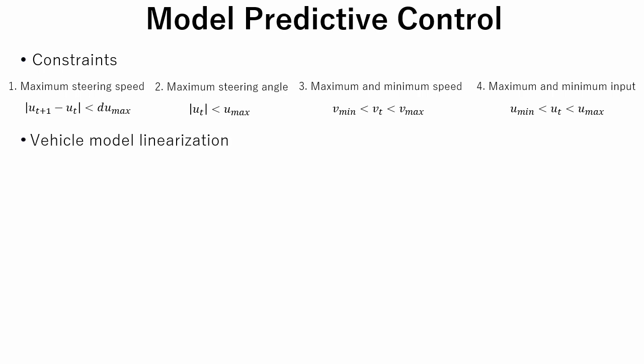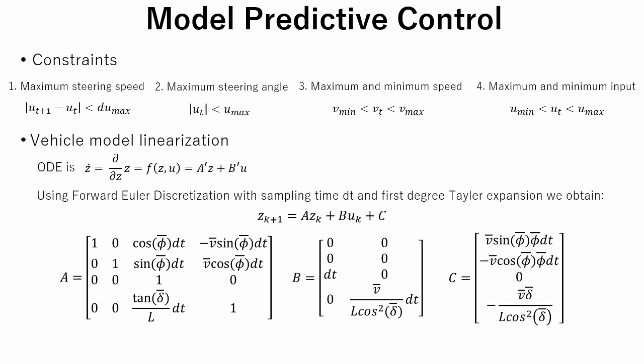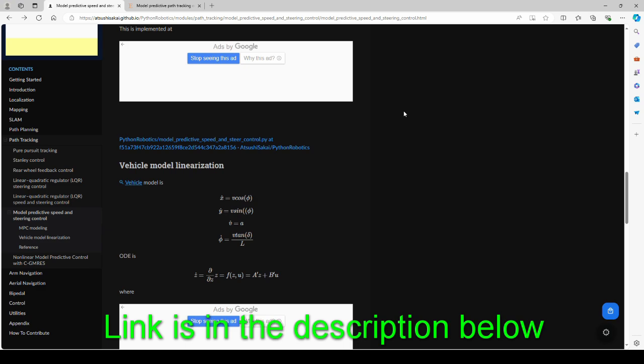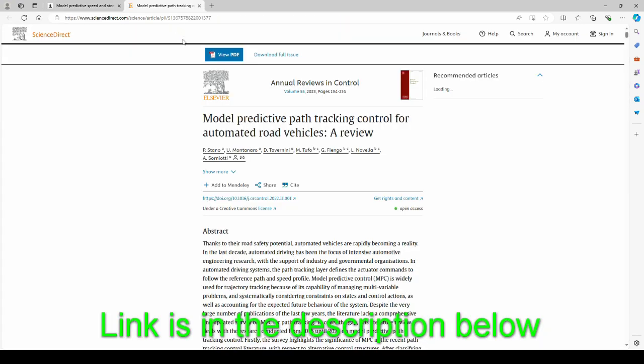Now we have to derive linear vehicle model that we can use for calculation in our program. Ordinary differential equation is represented in this form. Using forward Euler discretization with sampling time dt and first degree Taylor expansion, we obtain a discrete time model. In this tutorial, we will not do calculations to derive a, b and c. For a more detailed explanation please see this web page or this article.